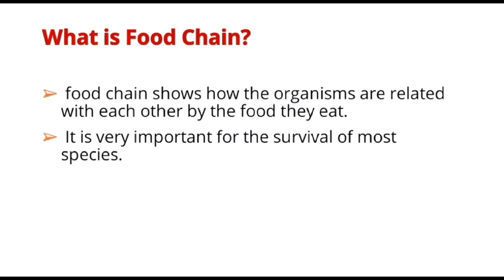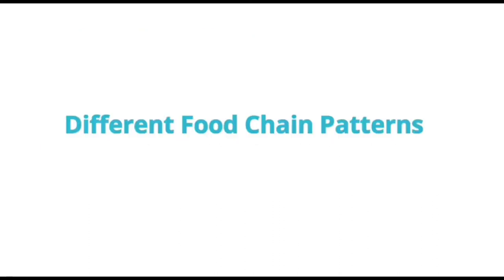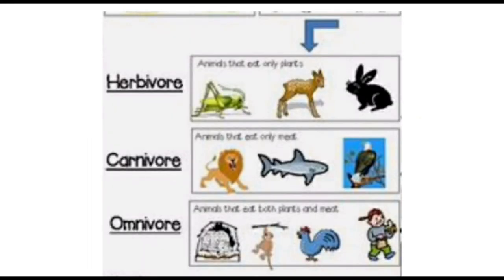A food chain basically shows the relationship of how we are dependent on each animal or plant for food supply. There are various different types of food chain patterns — for example, herbivores, carnivores, and omnivores — and these are categorized according to the type of food they eat.